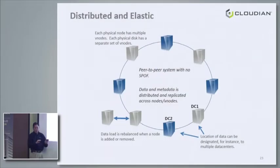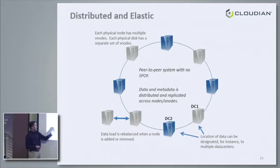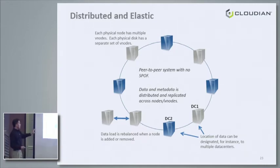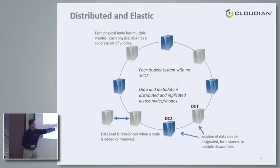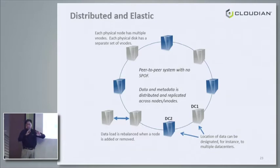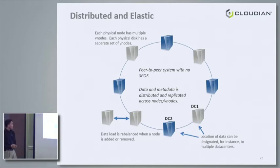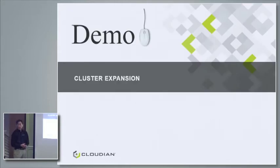This diagram has multiple data centers. We take data center topology into account for failure domains, protection policies, and per-data-center policies. In a peer-to-peer system, all the software is installed on all nodes — any node can receive any request. This makes adding and removing nodes easy; when we add a node, it's automatically incorporated into the cluster with some data movement per the consistent hashing algorithm.